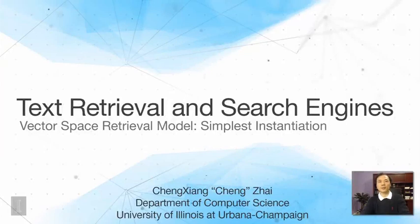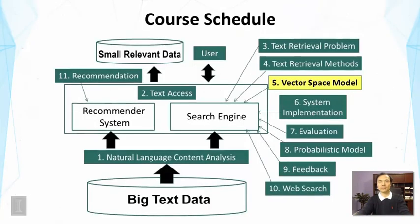In this lecture we're going to talk about how to instantiate a vector space model so that we can get a very specific ranking function. This continues the discussion of the vector space model, which is one particular approach to designing a ranking function. We're going to cover the simplest instantiation of the framework.